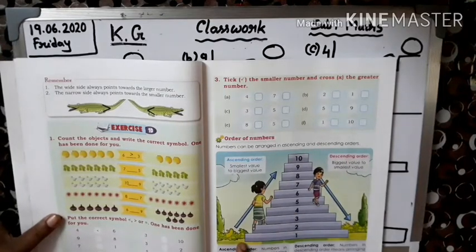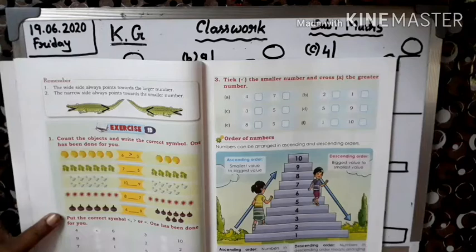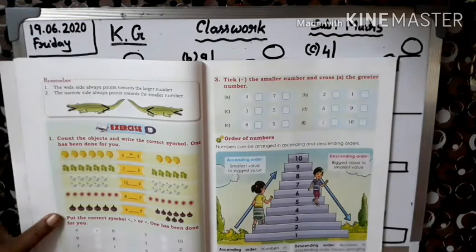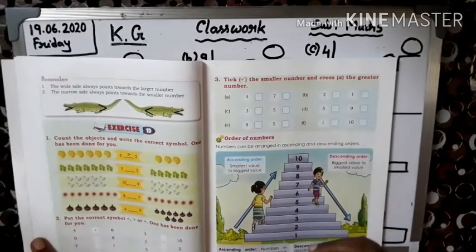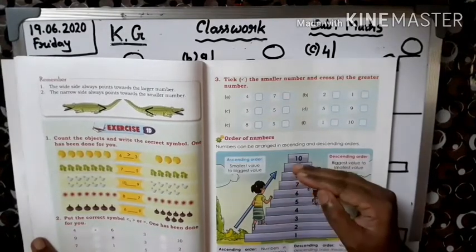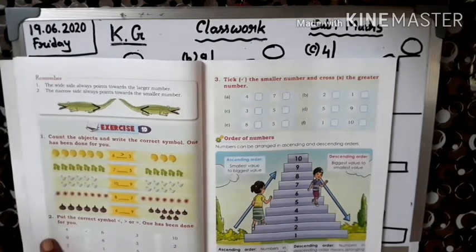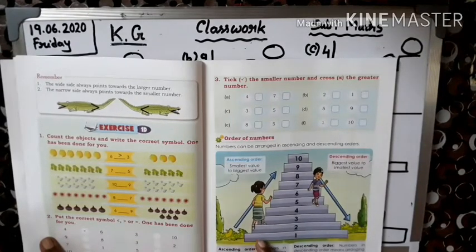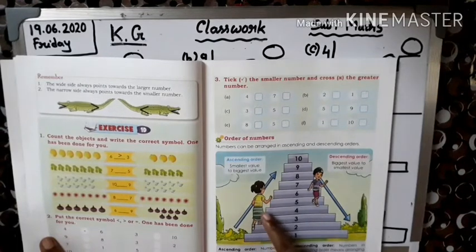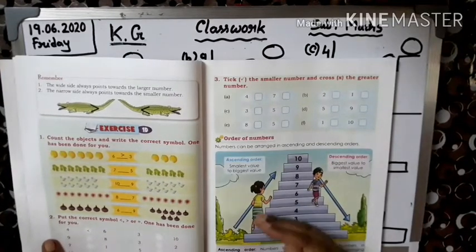Ascending order. Numbers in ascending order means arranging them from smallest to biggest. Smallest to biggest means small number se bada number jana, ye hai ascending order. Dekho, yaha bachy kya kar rahi hai? Small step one se upar char rahi hai. Bada number ke taraf ja rahi hai. To ye hai ascending order.